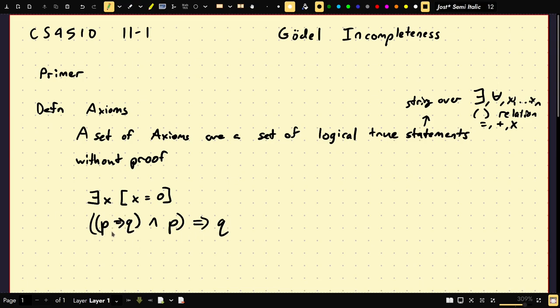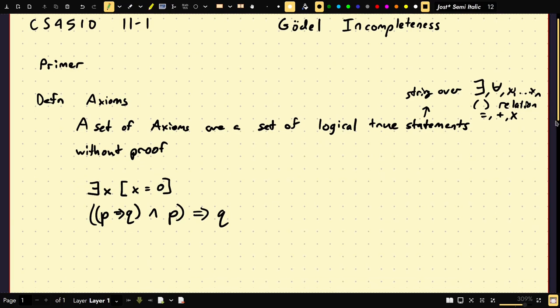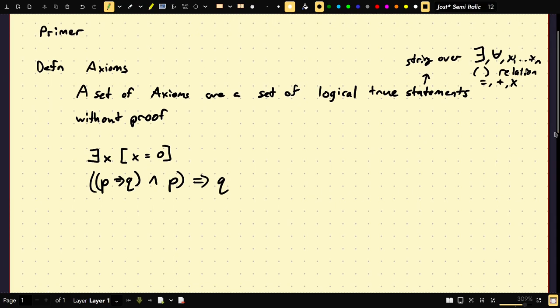If p implies q, and p, then those together will imply q. That's your sort of deduction. This is called modus ponens. There are of course things like negation — negation of negation of p is true if and only if p is true.